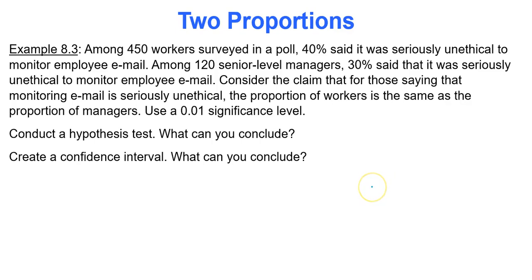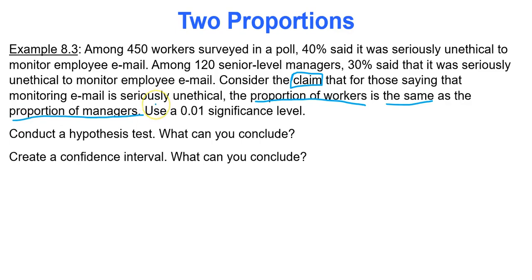Now we'll do a hypothesis test and confidence interval for a new example. Among 450 workers surveyed, 40% said it was seriously unethical to monitor employee email. Among 120 senior-level managers, 30% said it was seriously unethical. We consider the claim that the proportion of workers who say monitoring email is seriously unethical is the same as the proportion of managers, using a 0.01 significance level.